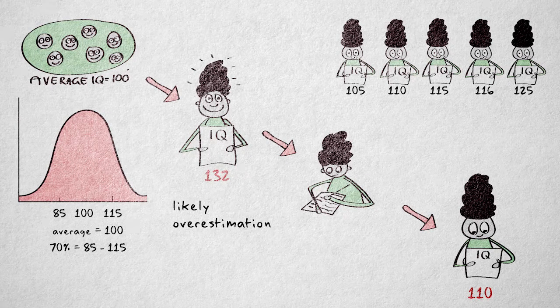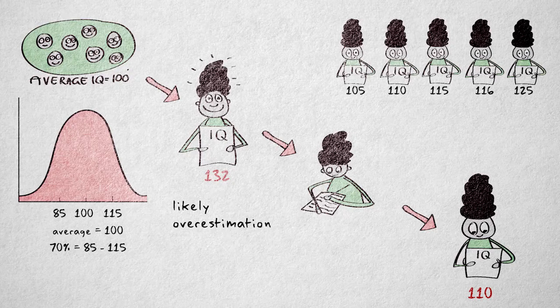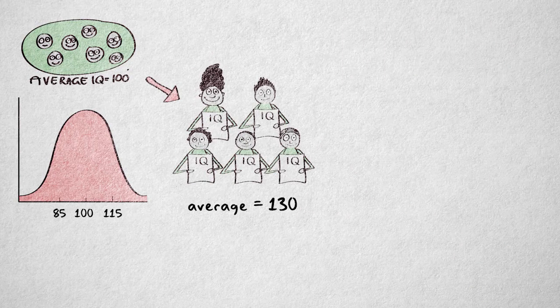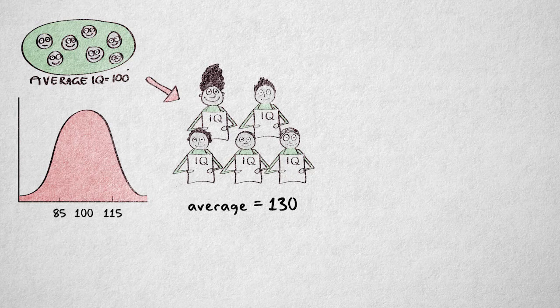Of course, we could have a genius in our pool of participants, and find a higher score on the second test. But if we look at a group of people with high scores, we can say that on average, their second score will be lower.